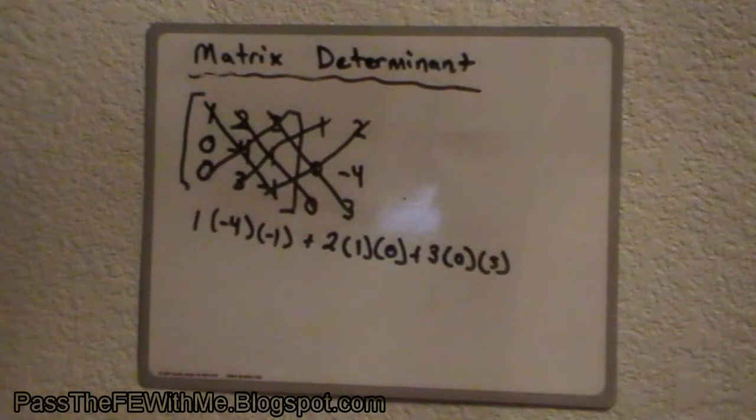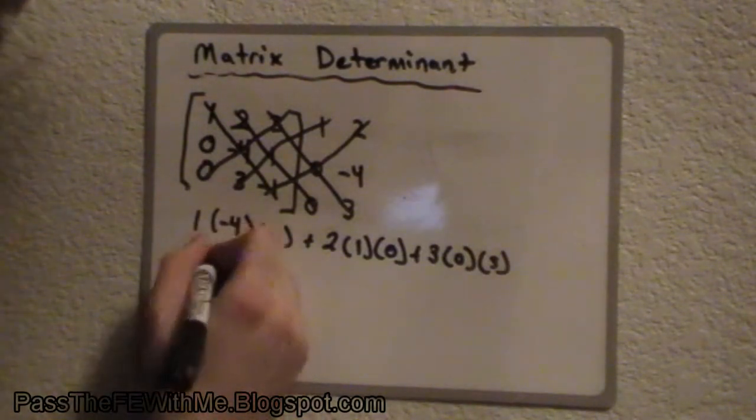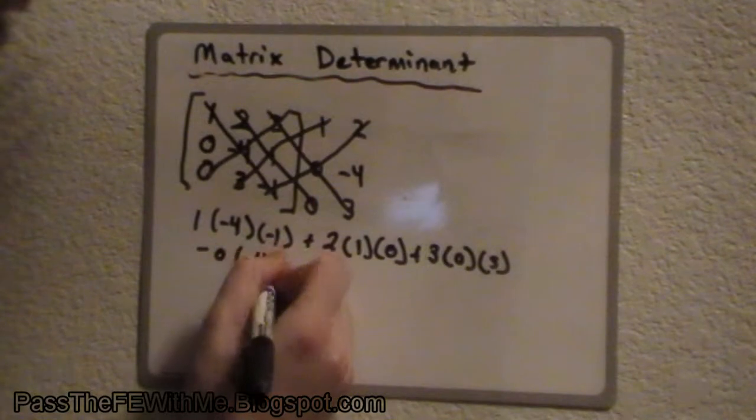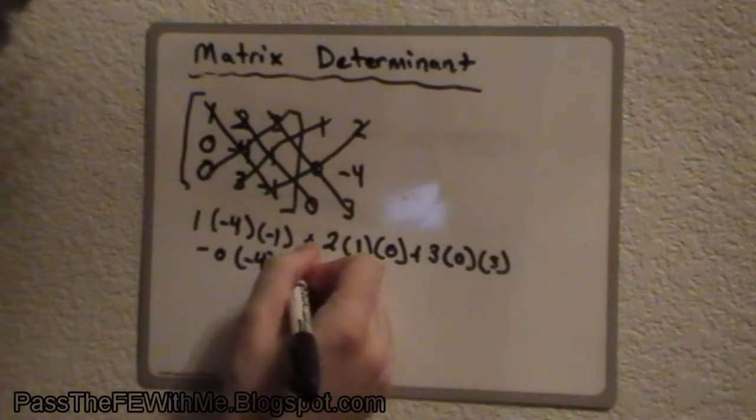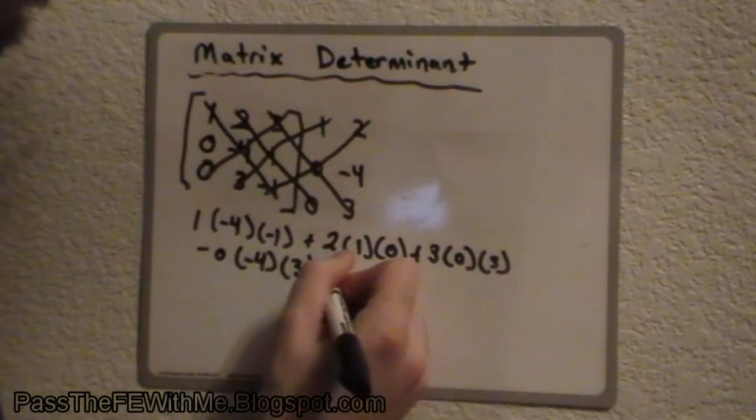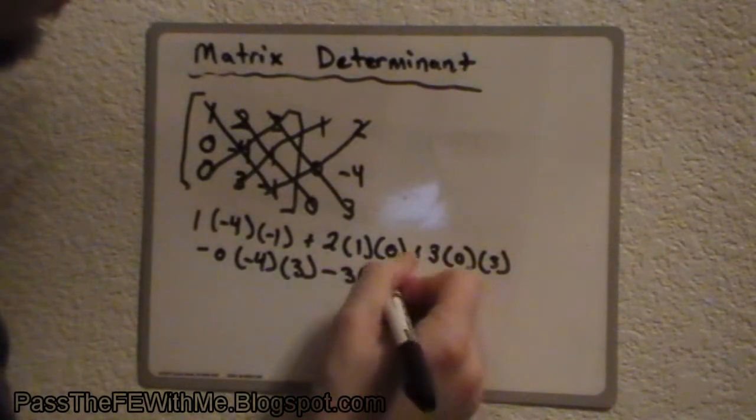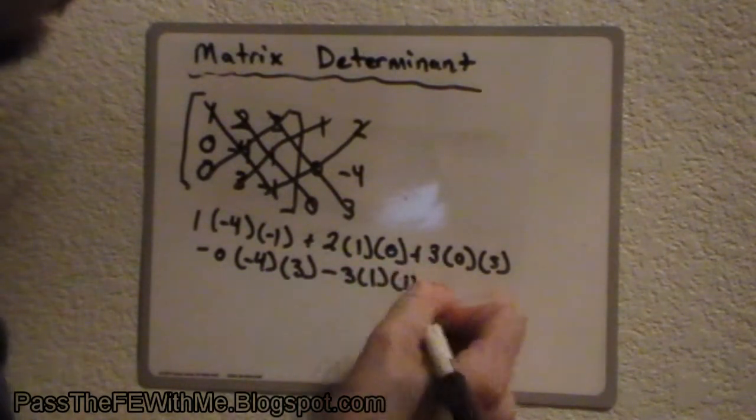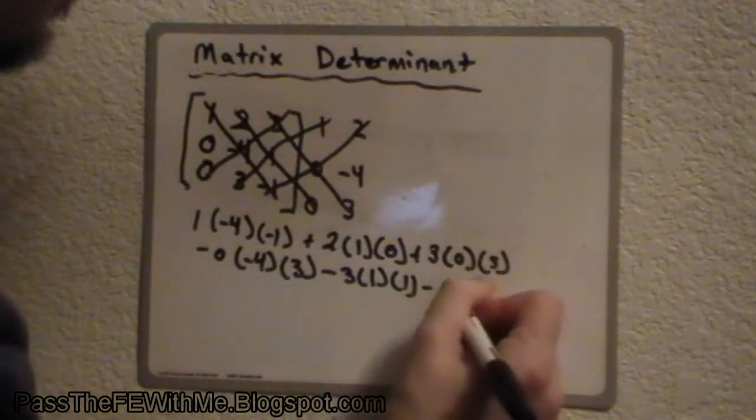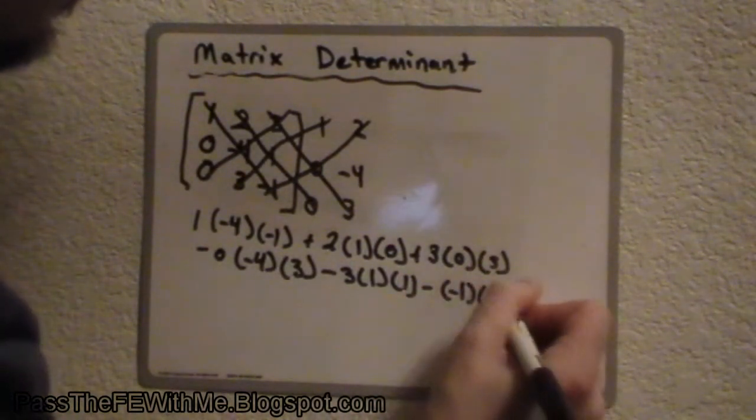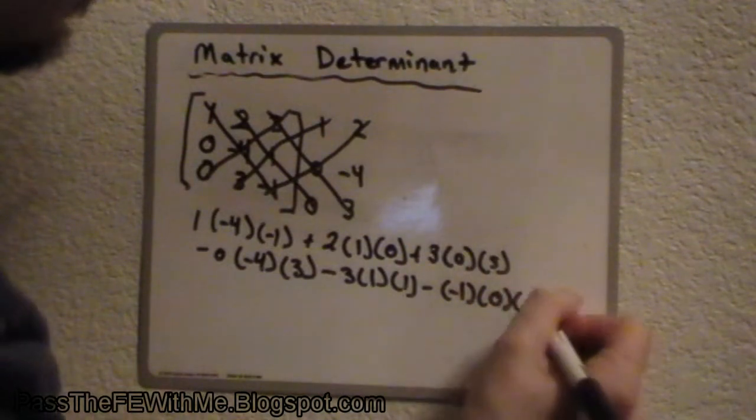And we're going to start going the other way. So, we'll go minus 0 times negative 4 times 3 minus 3 times 1 times 1 and finally minus negative 1 times 0 times 2.